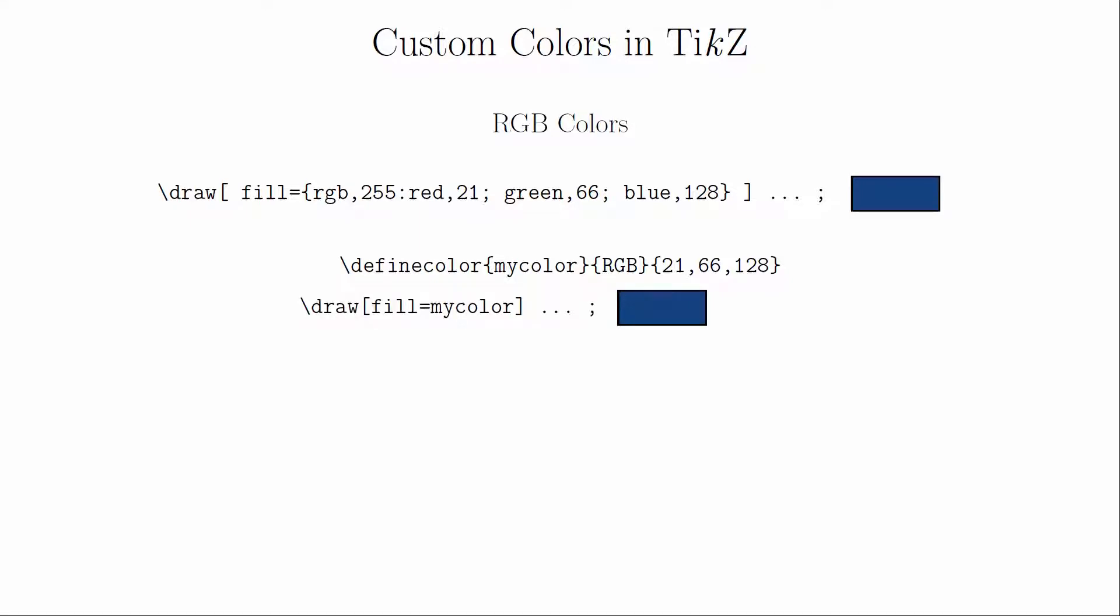If that's not good enough for you, you can also create your own colors. You can specify them with RGB code with the values ranging from 0 to 255. If you use a particular color often, you can actually define a color name in the preamble. Once the color is defined, you can call it the same way you call the predefined colors.